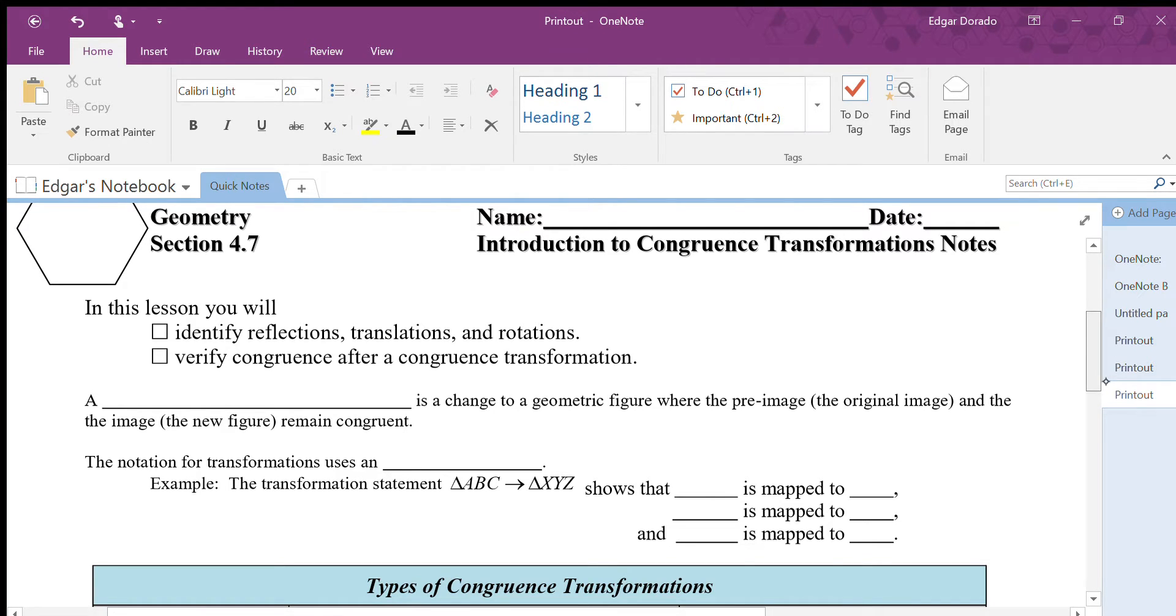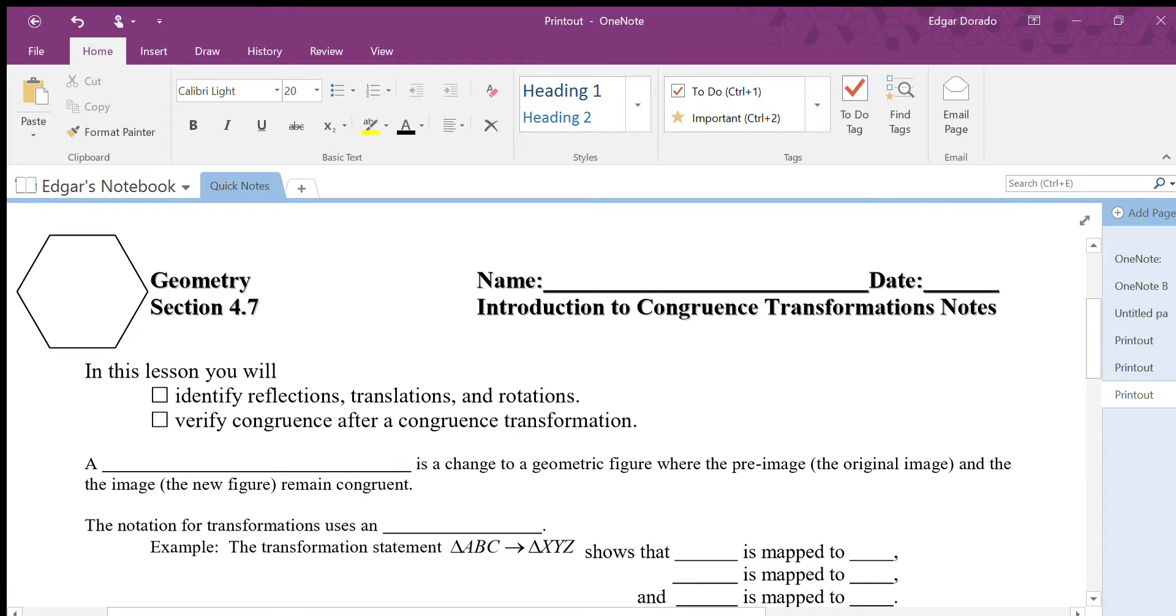To do that, we're going to need to go ahead and do a few things first. We need to first identify the reflections, translations, and rotations. Those are some types of transformations and we have to identify those in this particular section. Then we are also going to verify congruence after a congruence transformation.